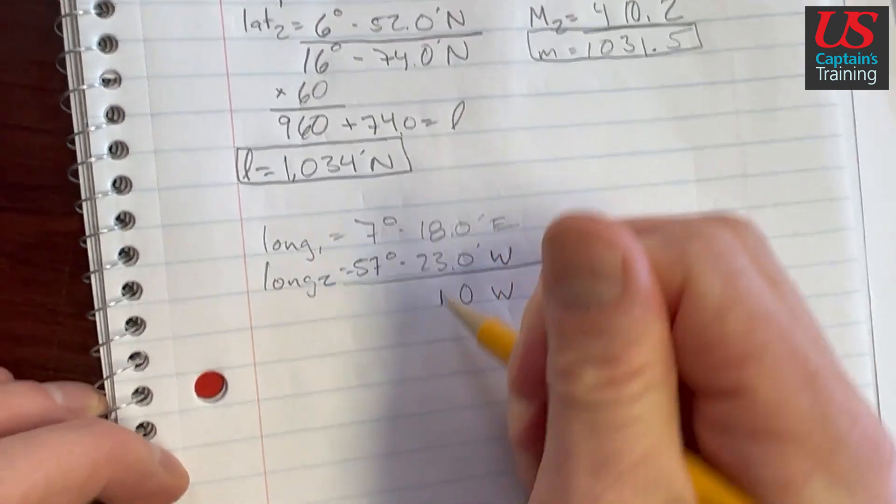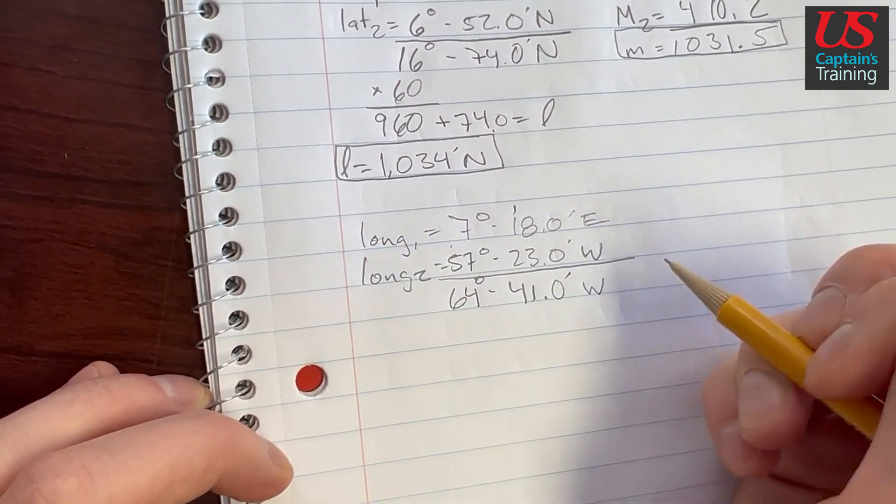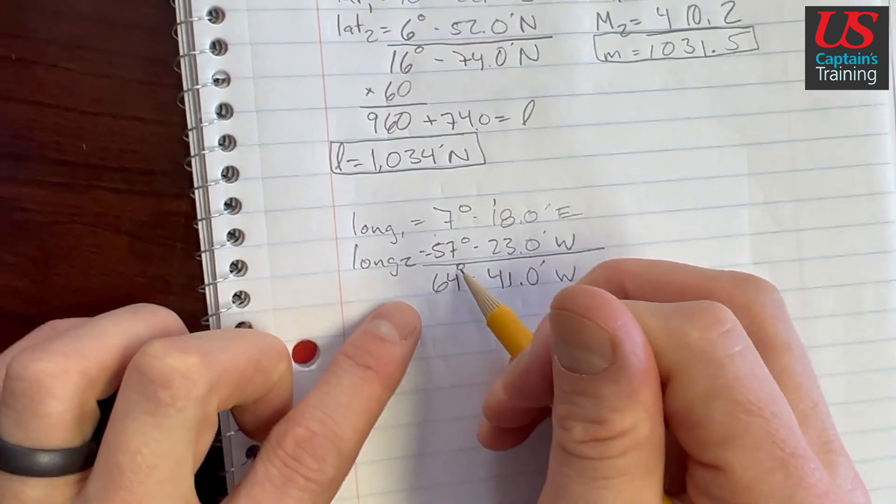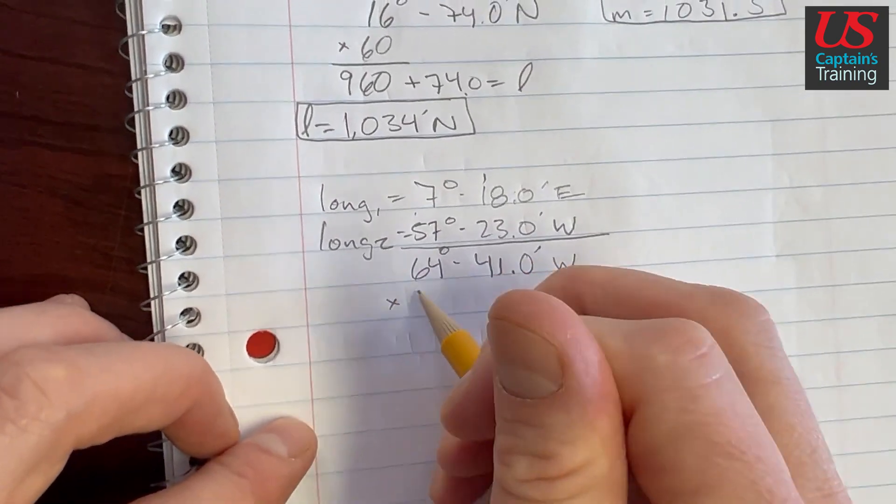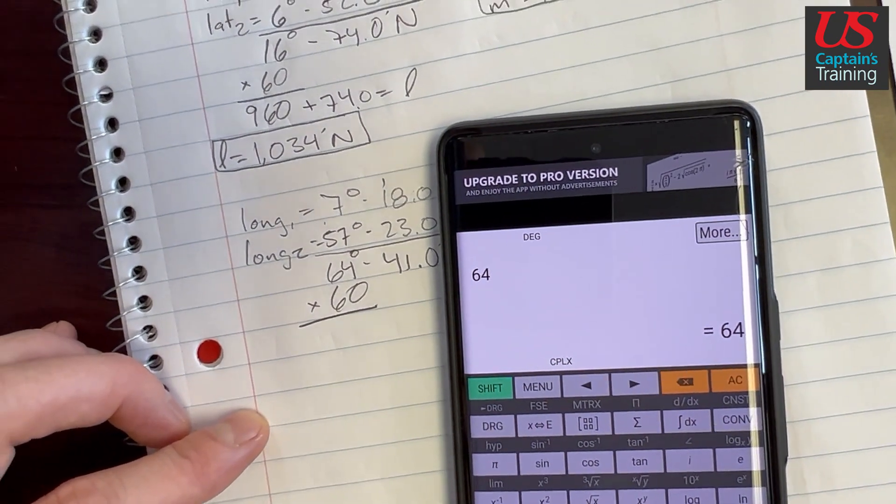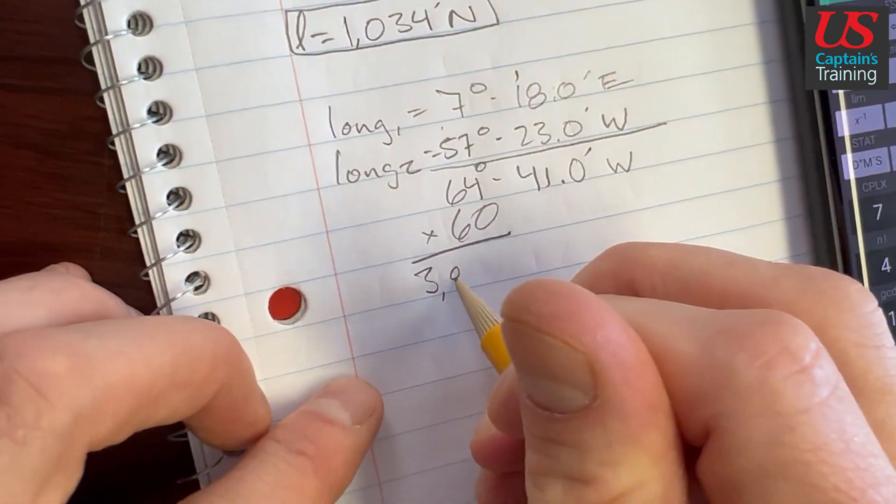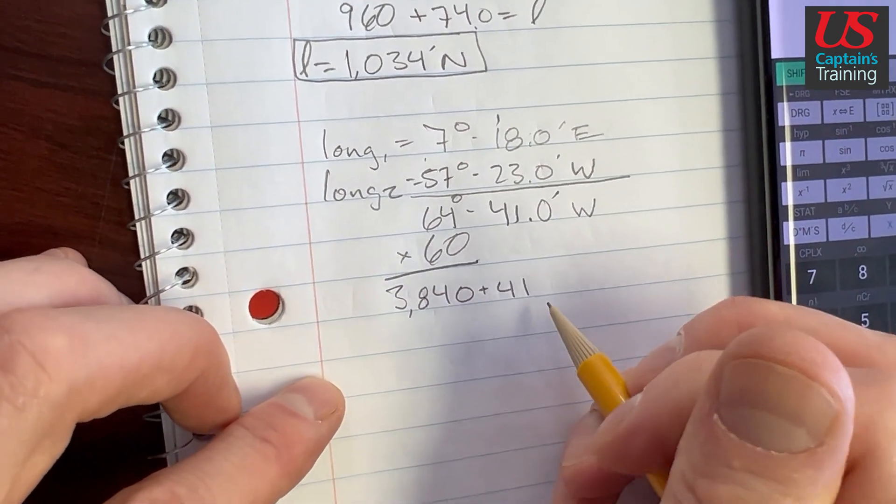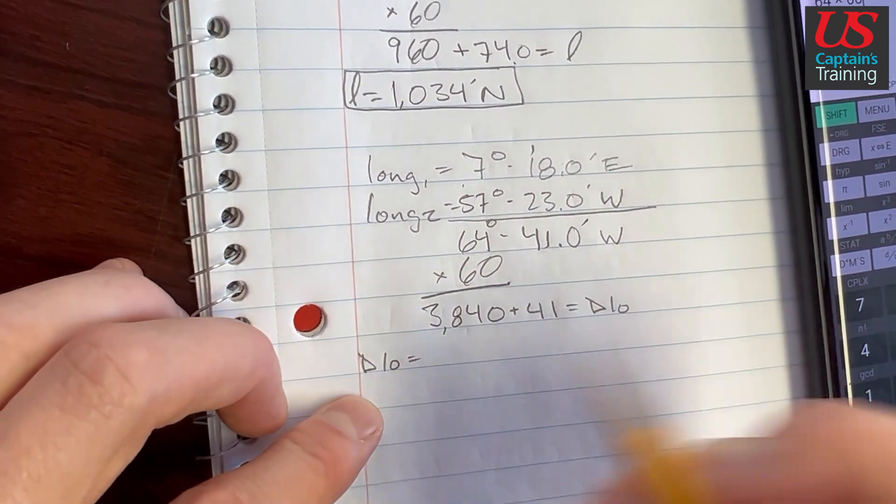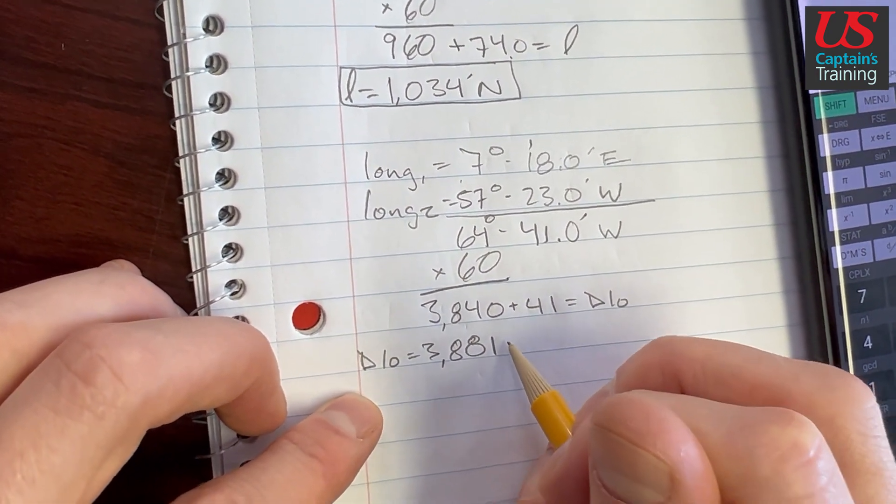And so let's convert these degrees to minutes. We'll get it all in minutes. So 64 times 60 equals 3840, plus these 41 minutes here. This will equal our D low. So D low equals 3881 minutes west. There's our D low.